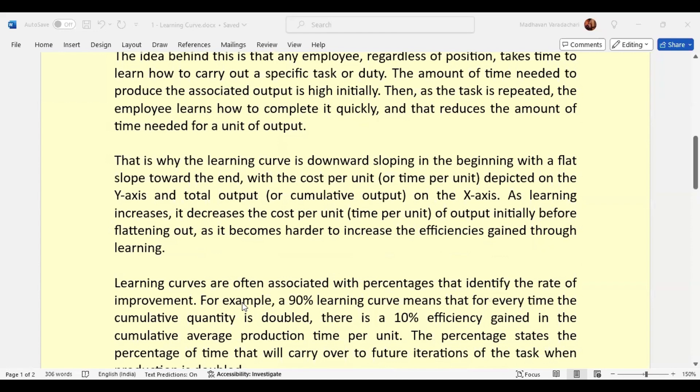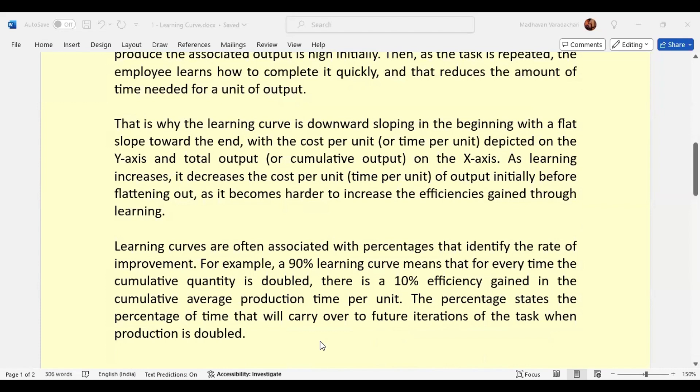Learning curves are often associated with percentages that identify the rate of improvement. For example, a 90% learning curve means that for every time the cumulative quantity is doubled, there is a 10% efficiency gained in the cumulative average production time per unit, meaning that much time is getting saved. The percentage shapes the percentage of time that will carry over to future iterations of the task when production is doubled.